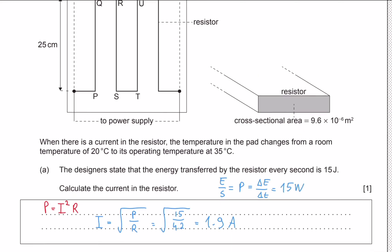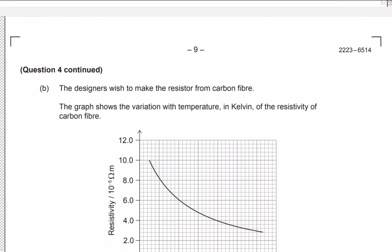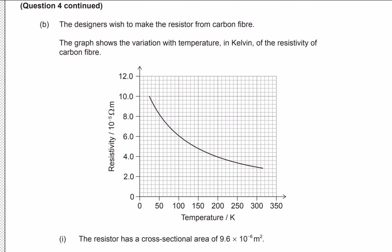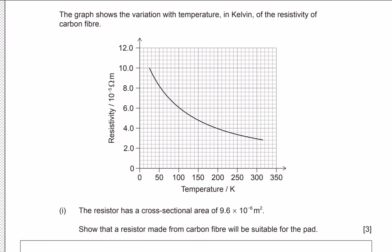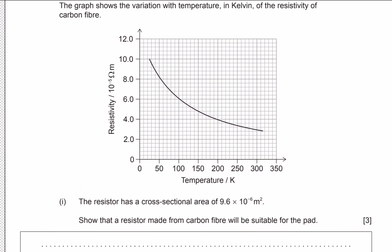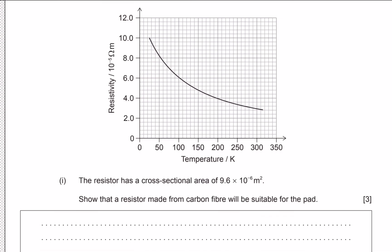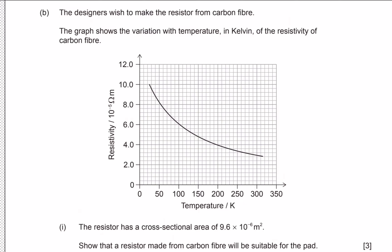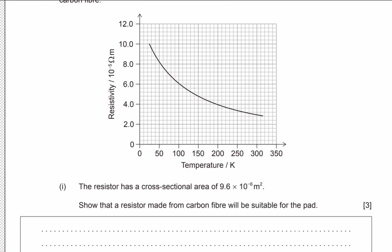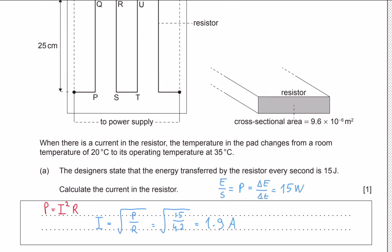We're told the pad is to be made from carbon fiber, and the variation of resistivity of this carbon fiber with temperature is shown on a graph. We're also given the cross-sectional area of the wire, and we need to show that carbon fiber will indeed work as a choice of material. Our operating temperature range is between 20°C and 35°C.